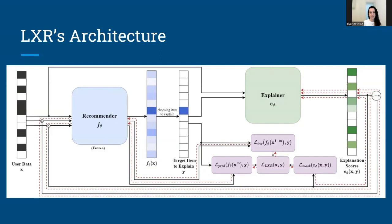The foundation of explaining recommendations begins with user data, represented by a vector, alongside a list of recommendations produced by the system. Within this list, a target item is chosen. The core question we seek to address is, what factors contributed to the recommendation of this specific item?